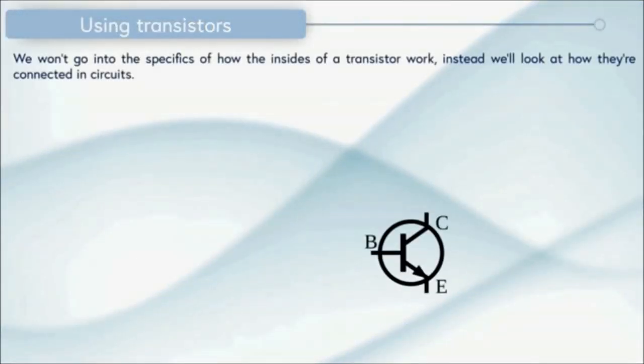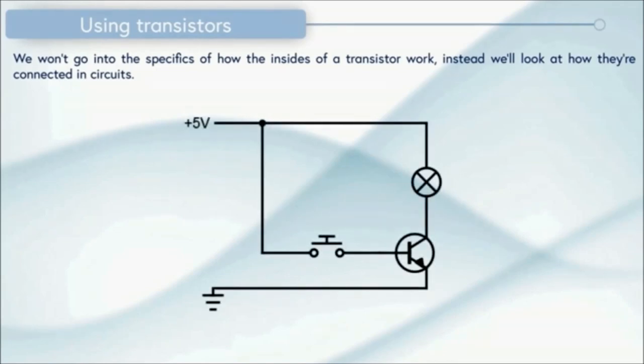So instead of going into the specifics of how the insides of a transistor work, instead we're going to look at how they're connected into circuits. Here's our BJT transistor with its three terminals, the base, the collector and the emitter. I've connected this into a simple circuit. I've got a power supply of 5 volts at the top and 0 volts at the bottom, or ground as we sometimes call it. I've got a switch which is controlling the input to the transistor and then I've got a light connected to the output.